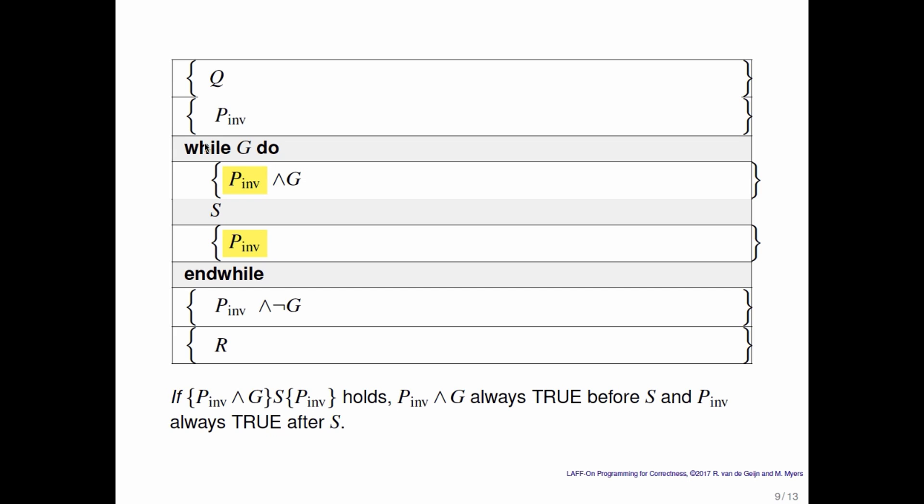If we can show that if the loop invariant holds as well as the loop guard before s, then we will again end up in a state where the loop invariant holds. Then we can conclude that the loop invariant holds before and after the statement s every time through the loop. That's the inductive step in mathematical induction.